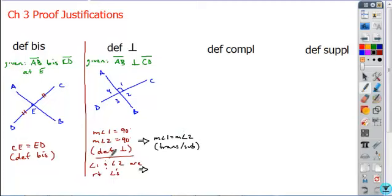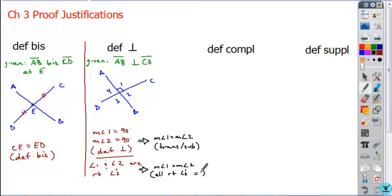If you chose the relationship route — saying those are right angles — you can still conclude that angle 1 equals angle 2, but the justification would be different. It wouldn't be transitive property or substitution; it's based on a relationship. All right angles are equal — that's one of the postulates, one of the assumed truths we begin with. You can only use definition of perpendicular if somewhere earlier in your proof, most likely in the given, you have a perpendicular symbol.